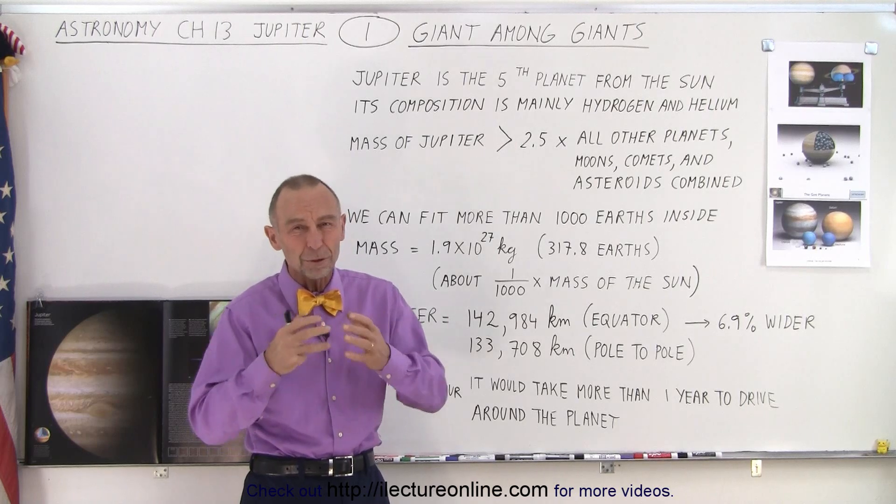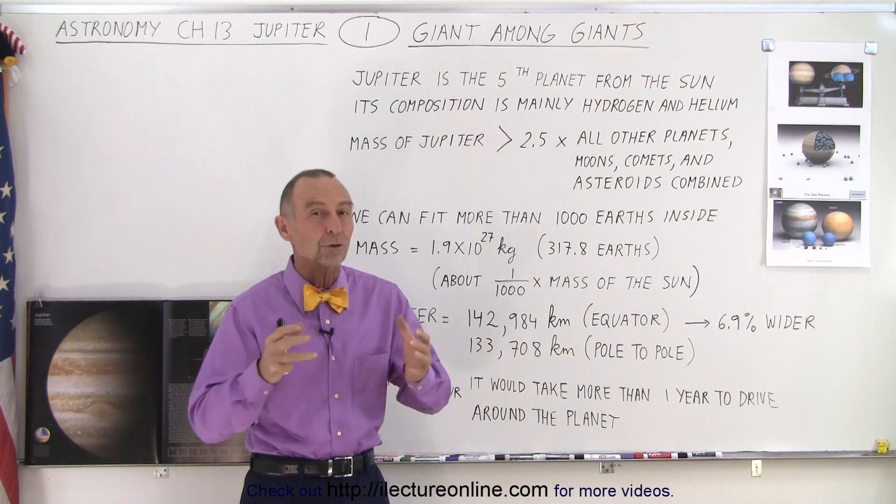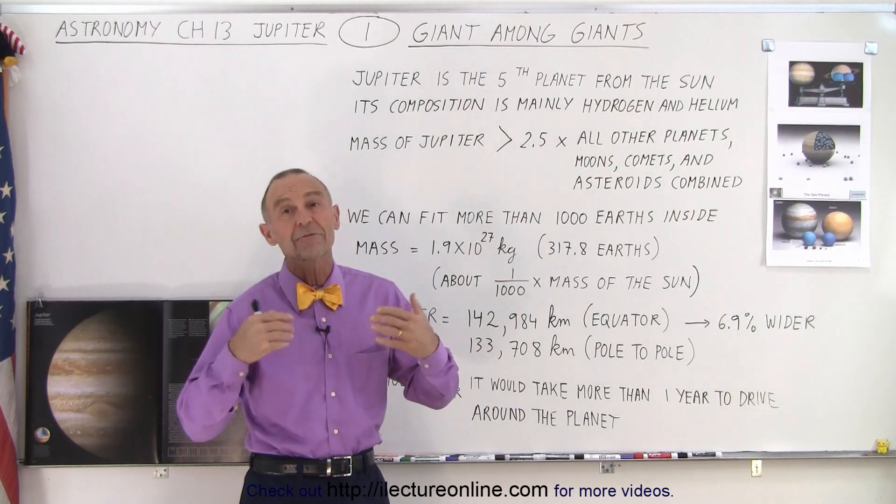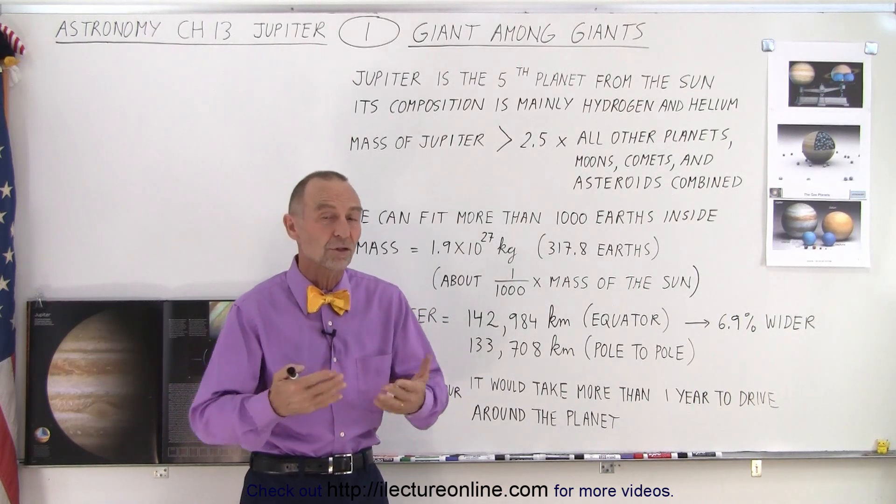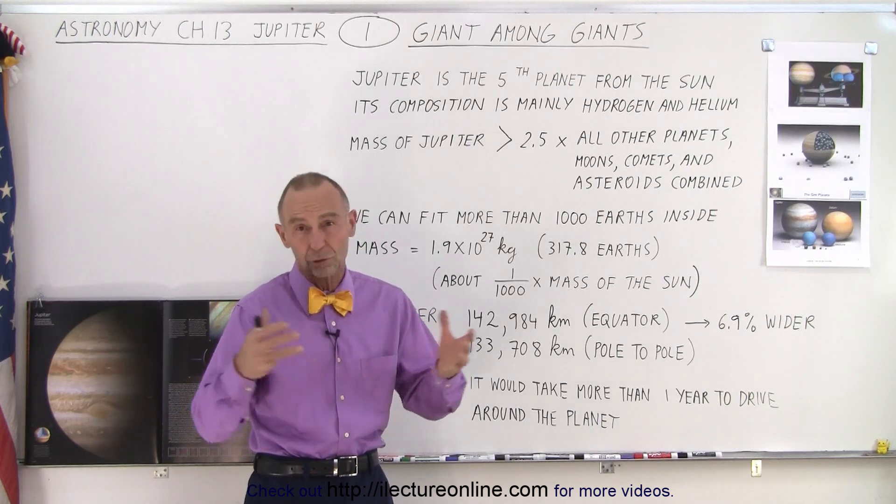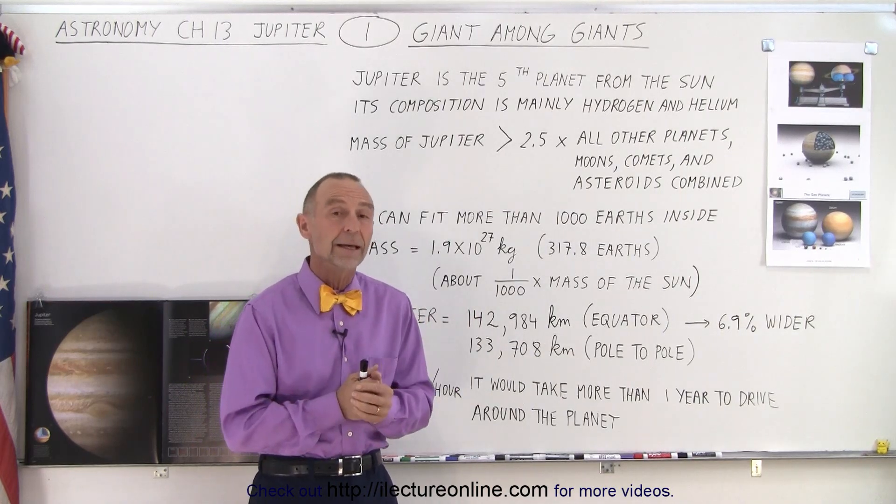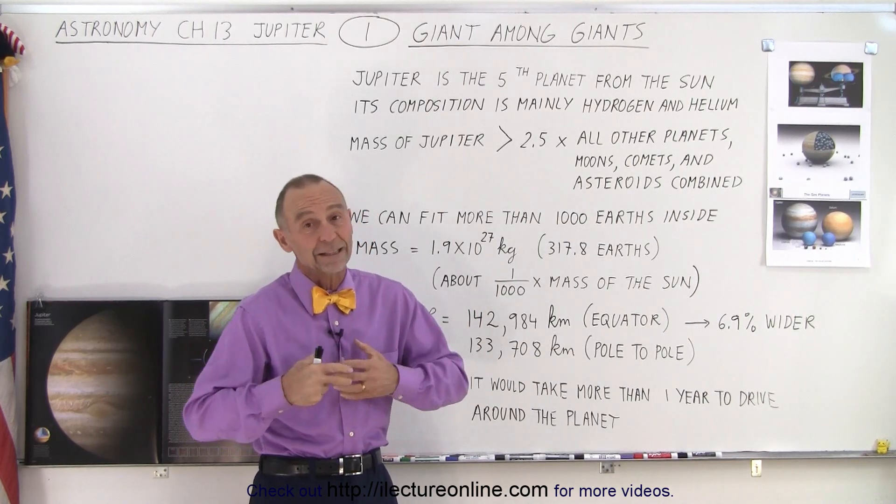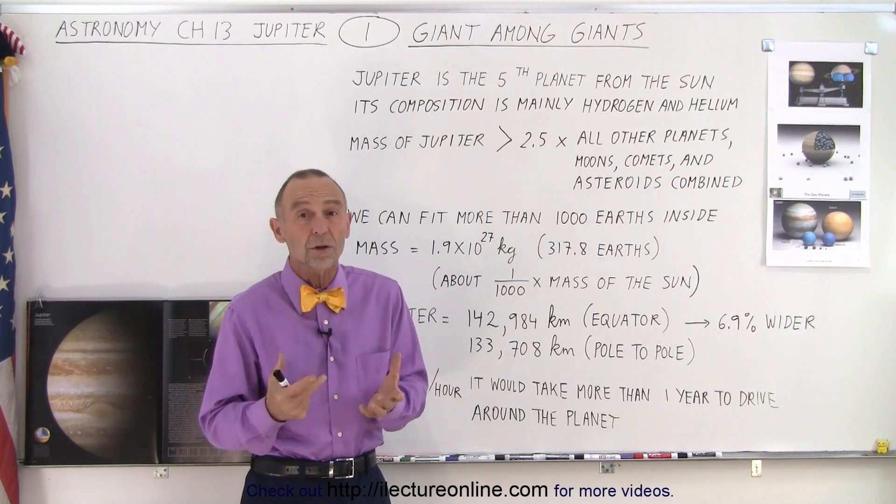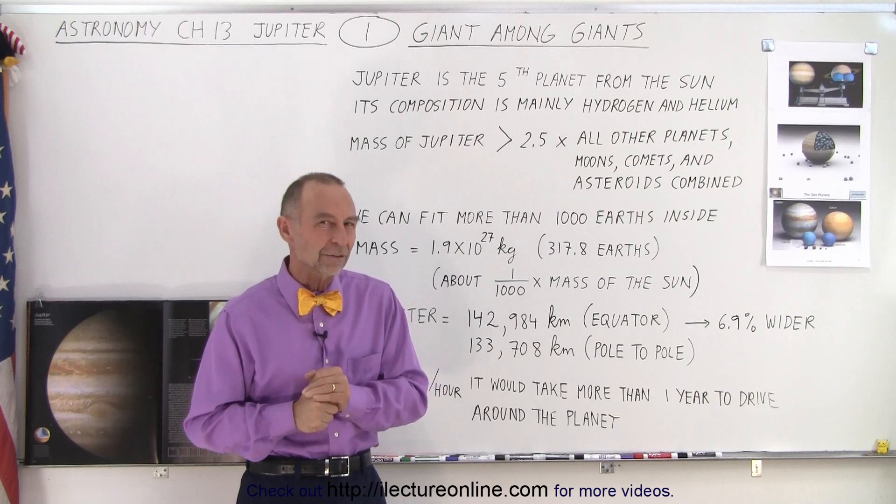And because of Jupiter being that big, it does play an important role gravitationally in our solar system and had a big influence in how the solar system came about, how the solar system developed into its current form. And it probably had a lot to do with the fact that we have an asteroid belt and it has a lot to do with the fact that Mars is probably a lot smaller than it could have been if it wasn't for Jupiter. Now we'll get into the details of that later.